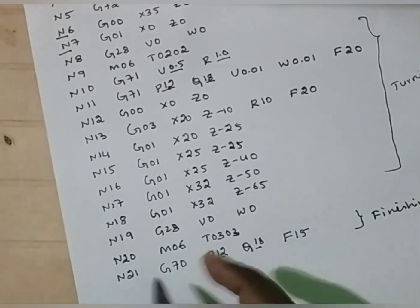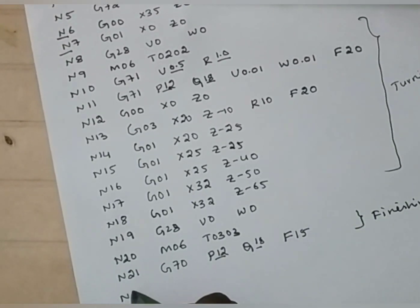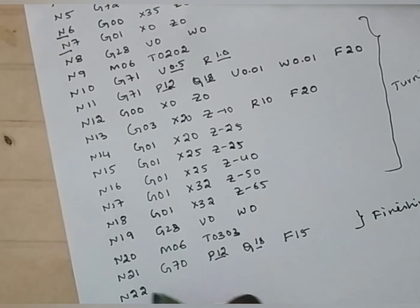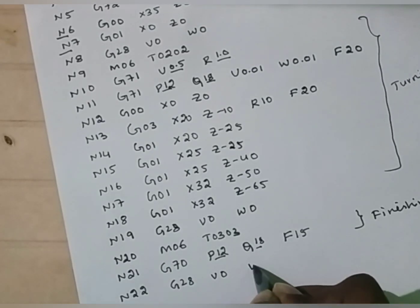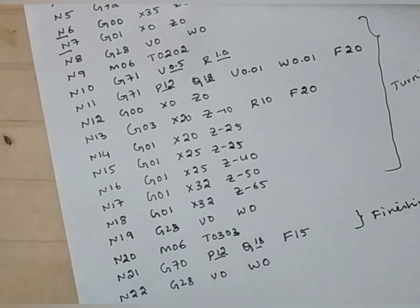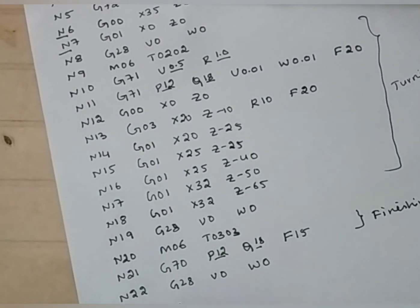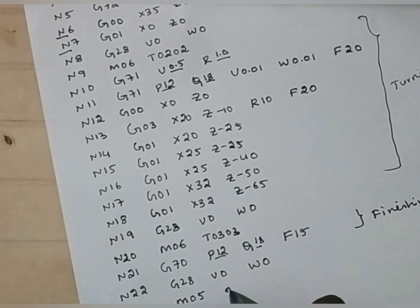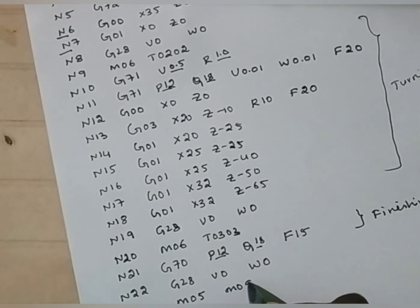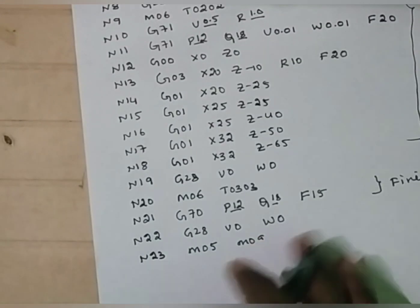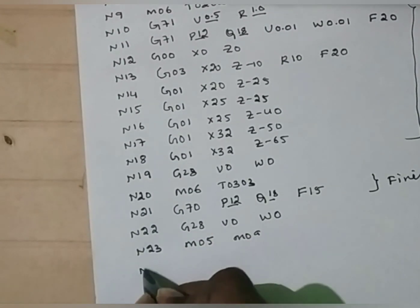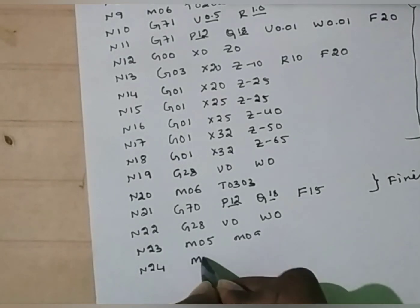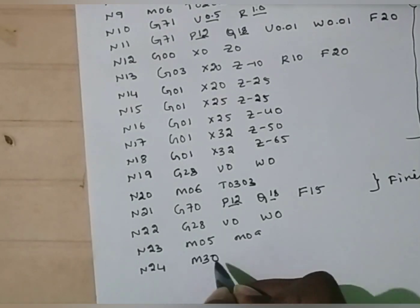Now all the operations are over. N22: send the tool to its reference point — G28, U0, W0. N23: now we have to switch off the spindle — M05. Switch off the coolant — M09. And finally, we have to stop the program — M30.